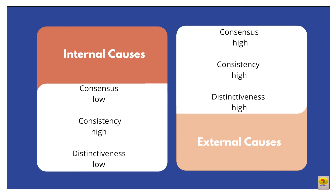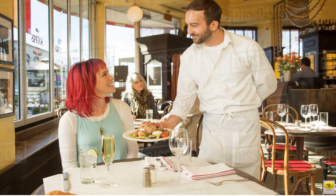Using Kelly's co-variation theory, we can understand whether an individual's behavior has an internal cause or an external cause. When consensus and distinctiveness are low and consistency is high, the behavior has an internal cause. Whereas when consensus, consistency, and distinctiveness are all three high, the behavior has an external cause. Now let's try and understand Kelly's co-variation theory using an example.